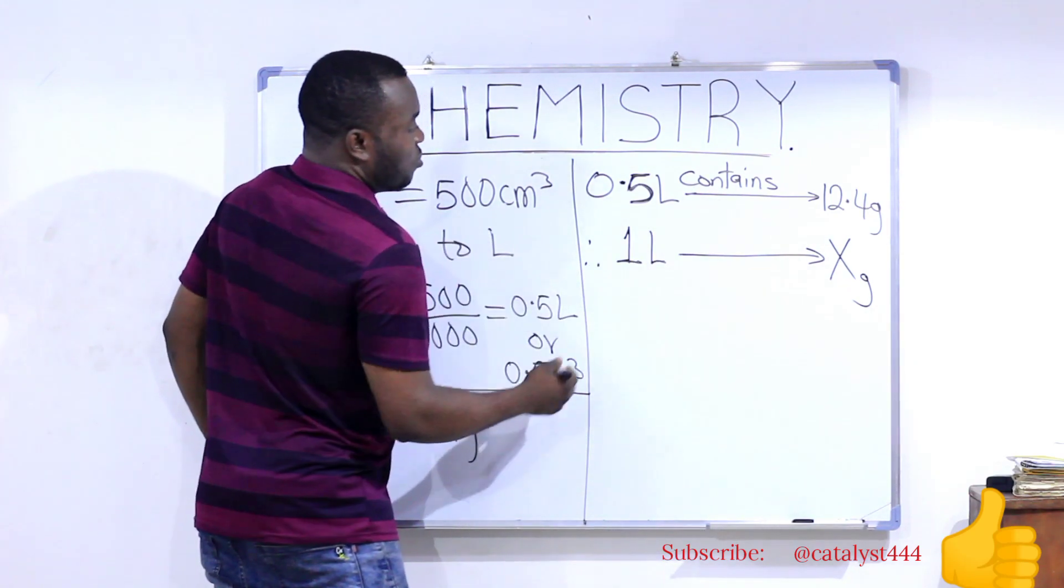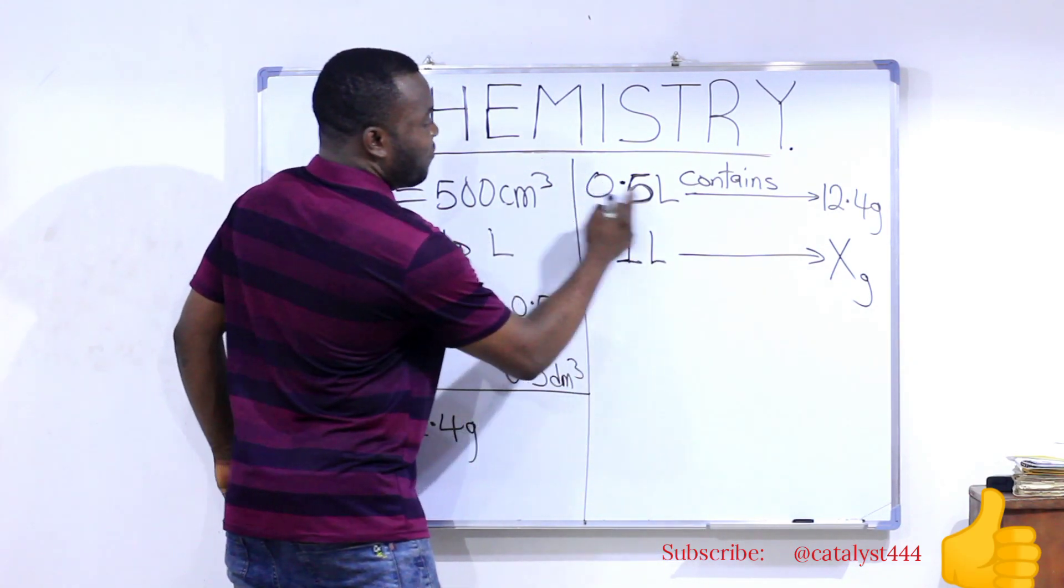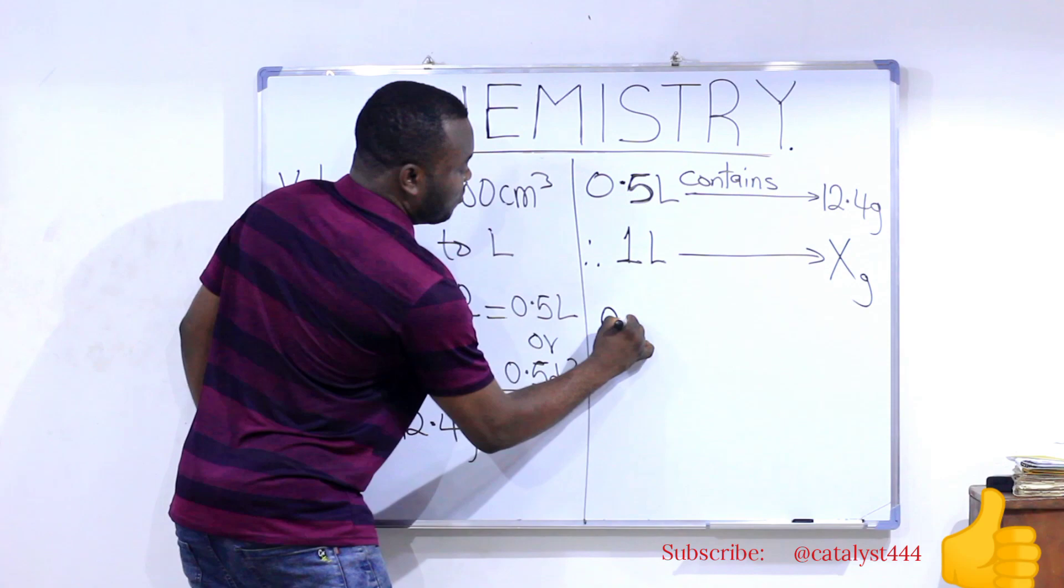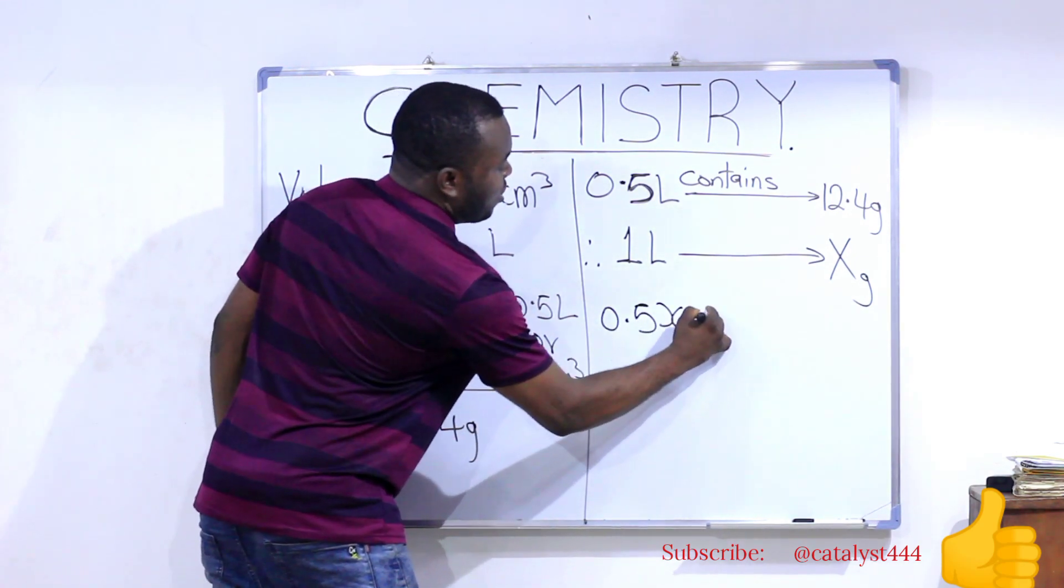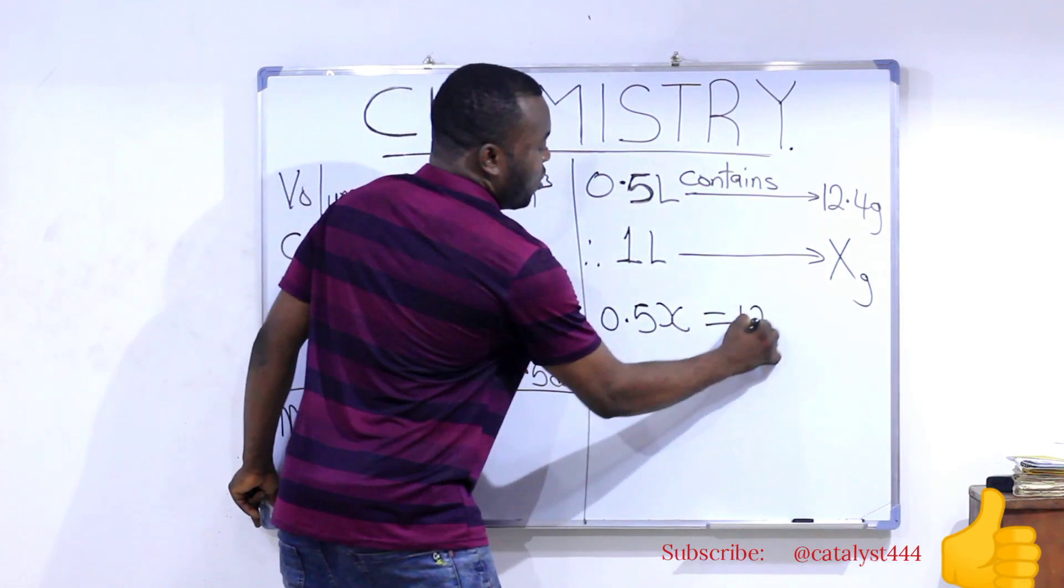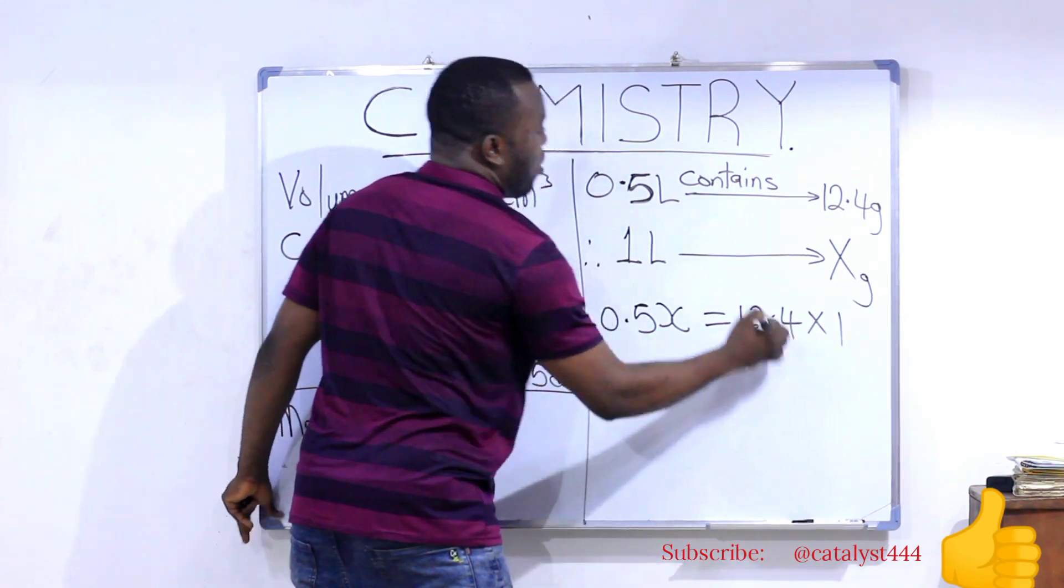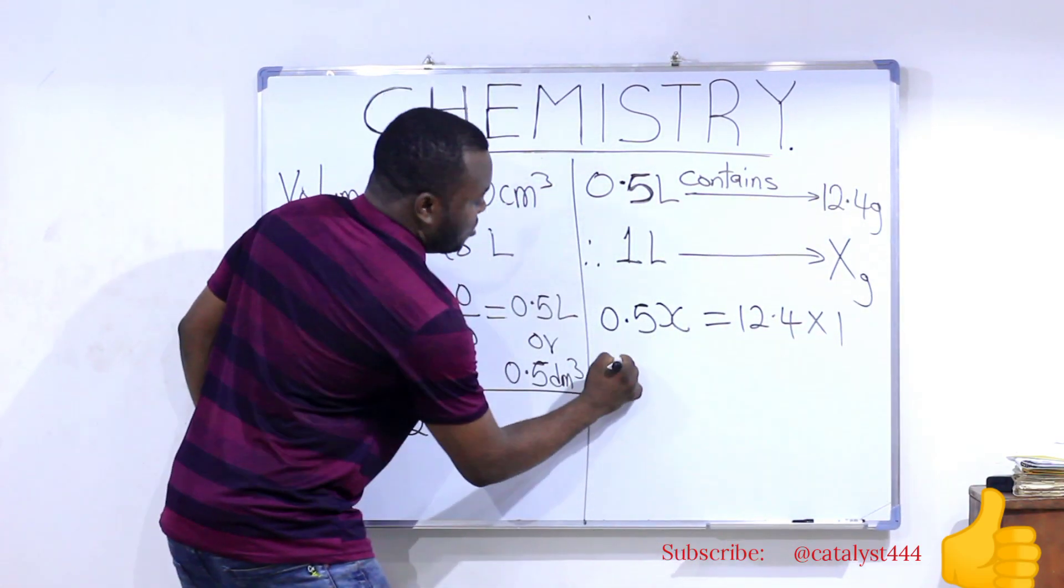From cross multiplication, we know that 0.5 times x will give us 0.5x equal to 12.4 multiplied by 1. Therefore,